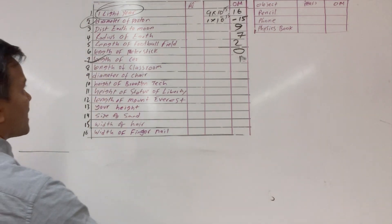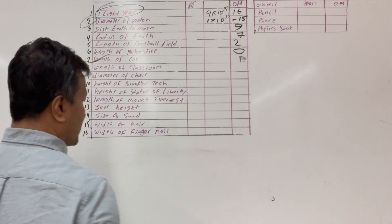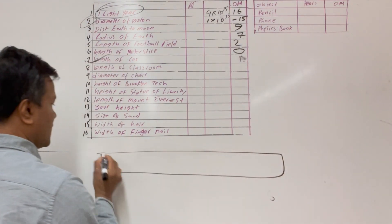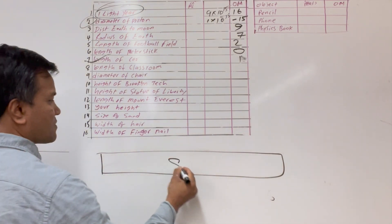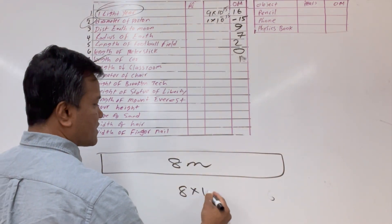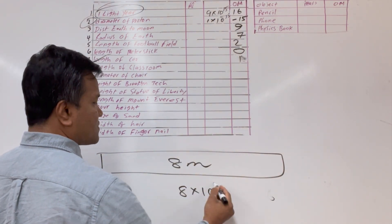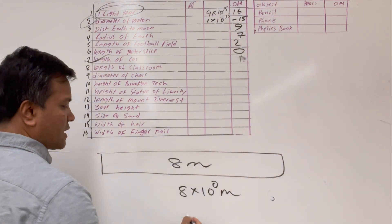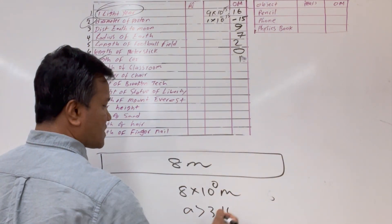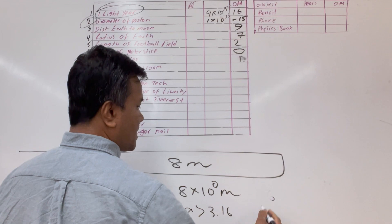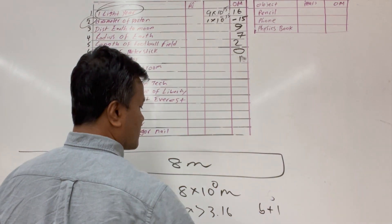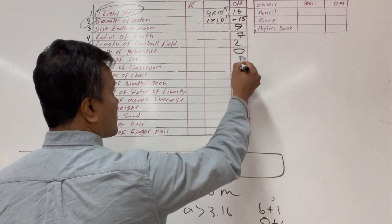The length of a classroom is about 8 meters: 8×10⁰ meters. A equals 8 is bigger than 3.16, so B plus 1: 0 plus 1 equals 1. The order of magnitude is 1.